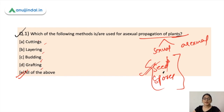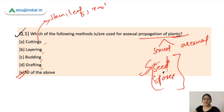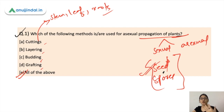In cutting, you cut a part of a plant — it can be a stem, a leaf, or a root. These parts then regenerate themselves into a new plant. So cutting refers to the propagation of a plant through cuttings of different parts of the plant.